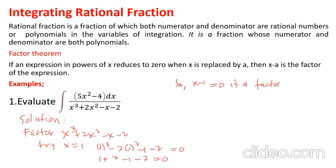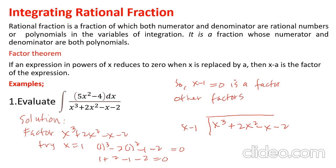To find the other factors, divide x³ + 2x² - x - 2 by x minus 1. Dividing gives x² + 3x + 2.